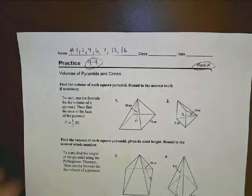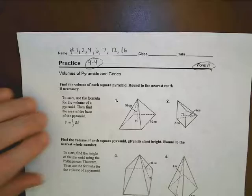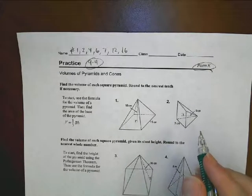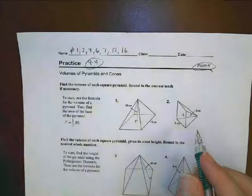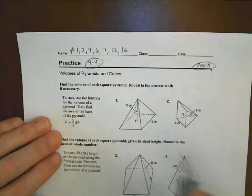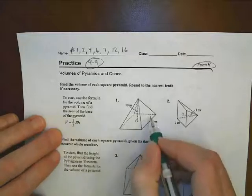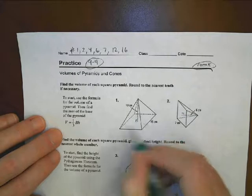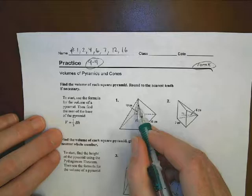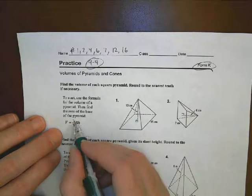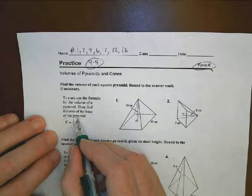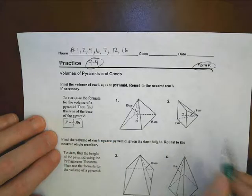All right, this is Math 2, Unit 9, Lesson 4, looking at volumes of pyramids and cones today. The basic concept here is once we determine what the base of a shape is going to be, we multiply that by the height that's given, and we end up, because of the pyramid, dividing it by 3. So that's your essential formula that we'll be coming back to again and again.